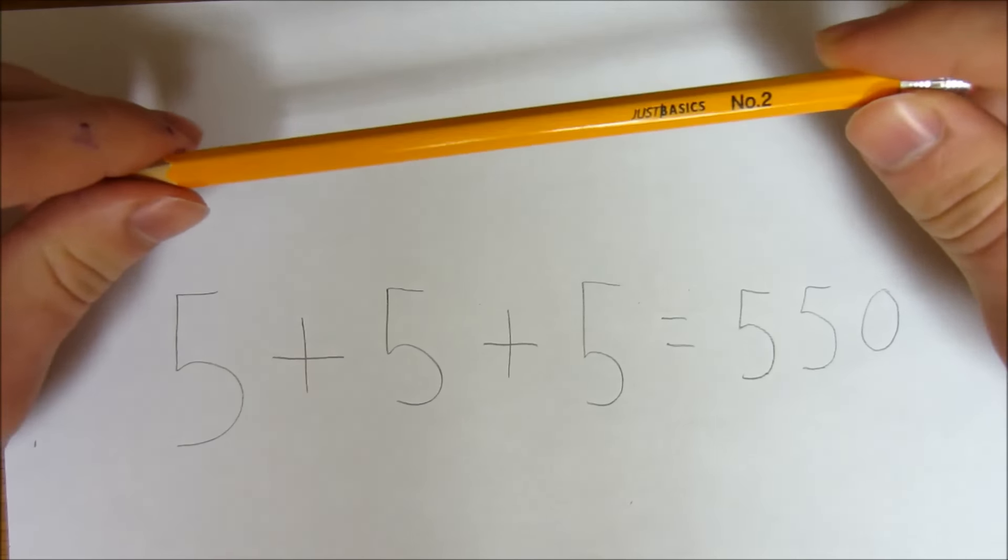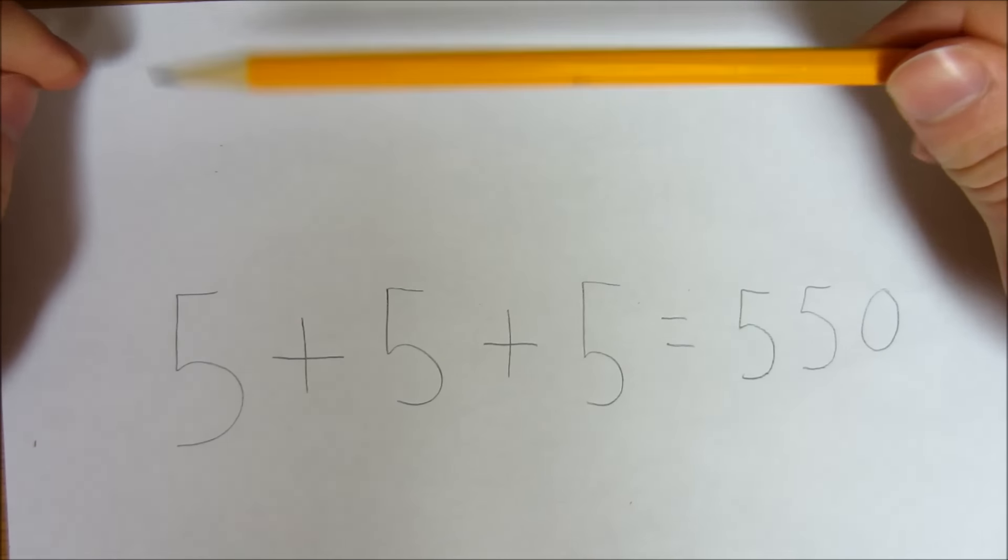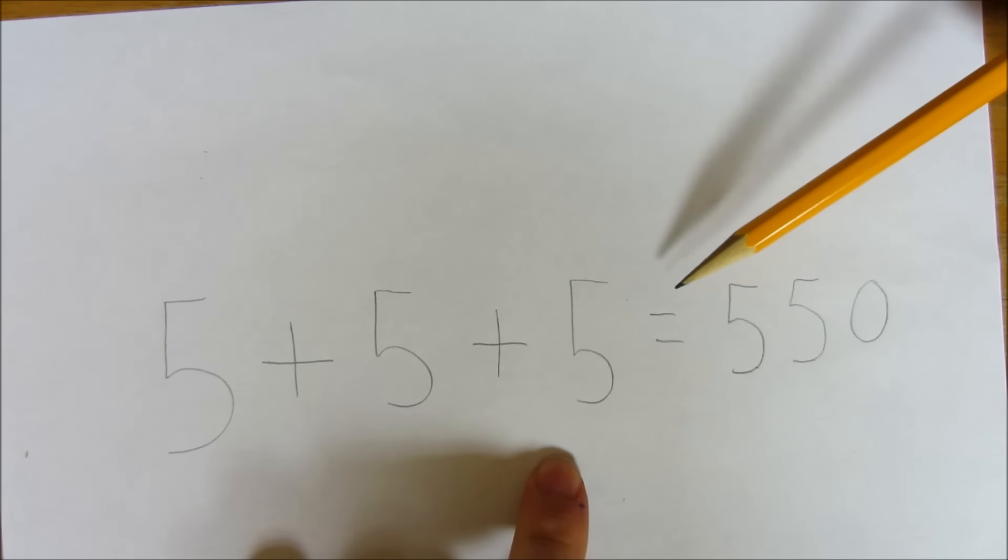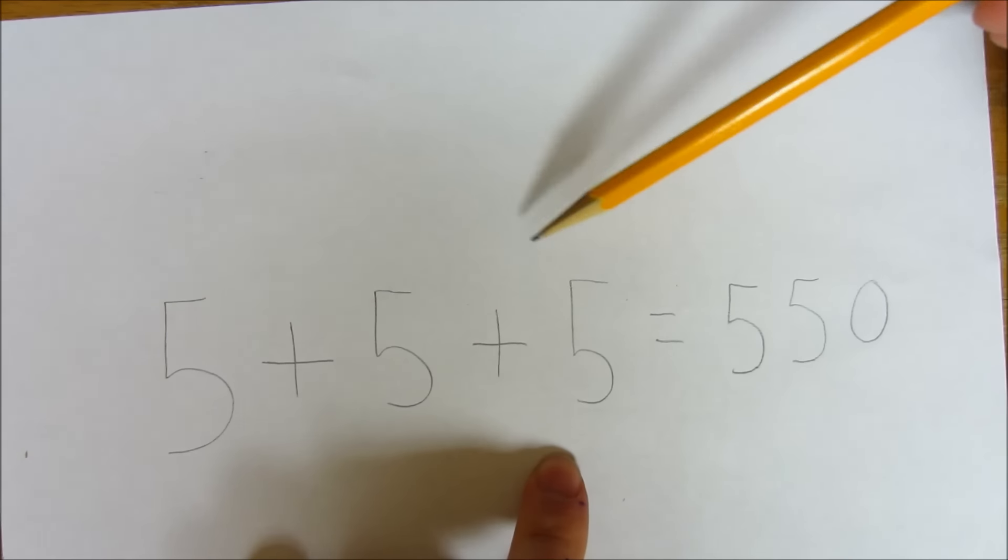So here's a little hint. You want to try and add a line so that you end up with two numbers on this side of the equal sign. So you want to try and get two numbers over here that add to 550.